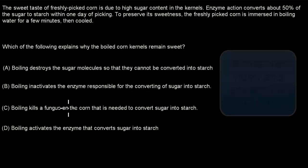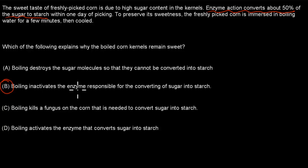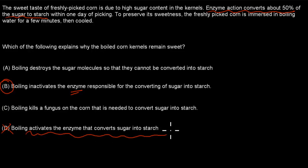The correct answer is B. Enzyme actions convert sugar to starch, and starch is not sweet, so the corn goes from sweet to not sweet via the enzyme. If we deactivate the enzyme, that conversion won't happen and it will stay sweet. D is wrong because activating the enzyme would make it less sweet. The fungus option is random and incorrect. So B is the right answer.